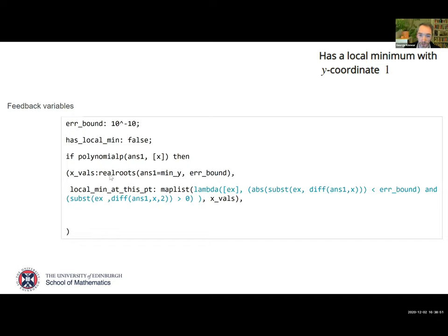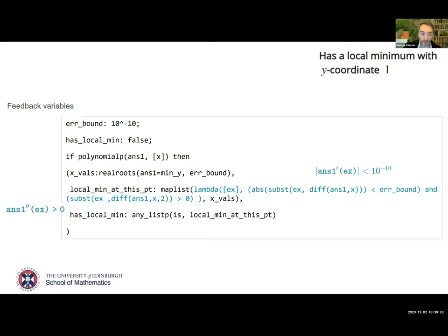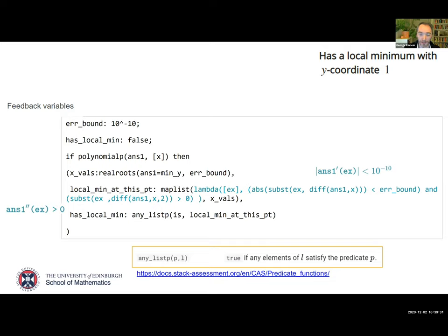Using map, I take my list of x-values and for each decide a true/false value: is the derivative essentially zero, and is the second derivative positive? That tells me there's a local minimum at that point. Then has_local_minimum uses Chris's any_listp function — given a list of trues and falses, this tells you if any of them is true. Overall, this tells me if any of the intersections with y equals one is a local minimum.